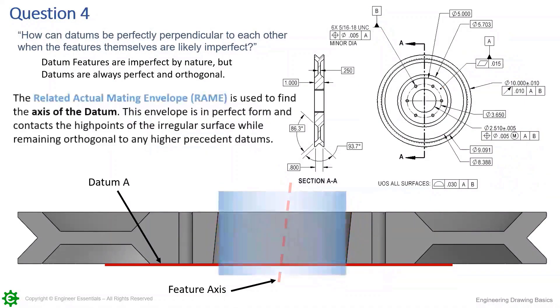So what we need to do is use what's the related actual mating envelope. The original envelope was the unrelated actual mating envelope, this one is a related actual mating envelope. So the envelope, if you picture a datum simulator expanding, staying perfectly perpendicular to datum A, it's going to expand, remain perpendicular to A and engage the high points here and here.